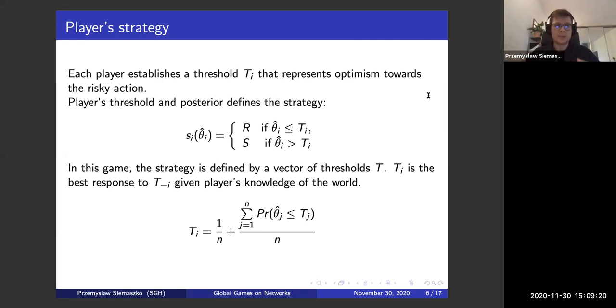And a threshold is basically some level of the state of the world. And if I believe the state of the world is lower than this threshold, I will participate in the risky action. And if it's above, I won't, I will stay safe. This threshold is the sum of probabilities of all the other players of joining the risky action. So this can be understood as optimism towards the risky action. If I believe everybody will join the movement anyway, then even if I think the state of the world, let's say that the government is very strong and we want to revolt against it, I will participate in the protest anyway because I believe everybody joins.